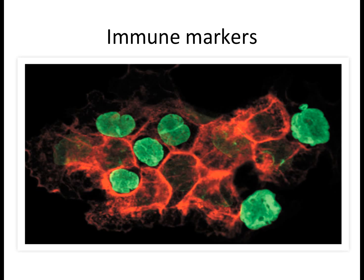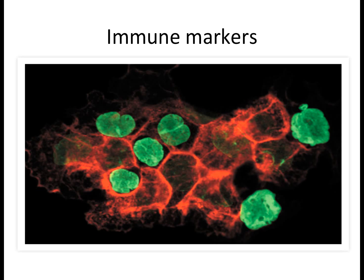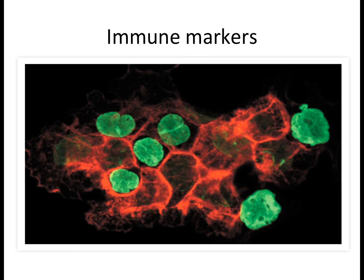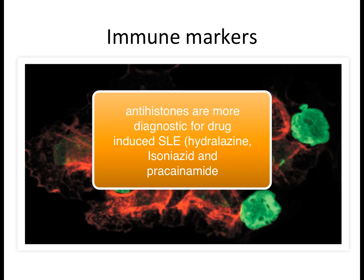The immune markers usually seen include anti-histone antibodies, anti-double-stranded DNA, anti-Smith, anti-phospholipid membrane, cardiolipin, and blood components. The most important to remember is anti-double-stranded DNA, as it is the most specific for SLE. However, in drug-induced SLE — such as from hydralazine, procainamide, or isoniazid — the main target antigen is histone, so antibodies are mainly focused against histones.